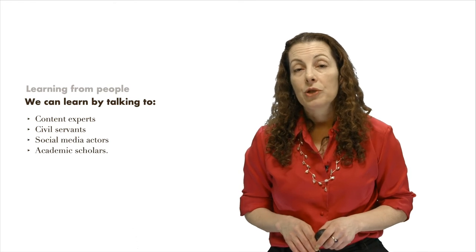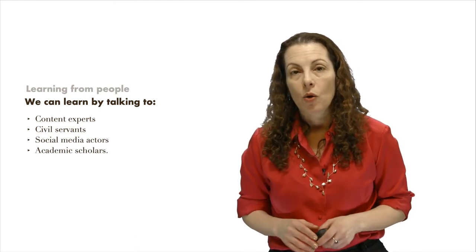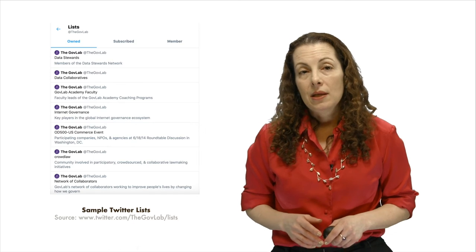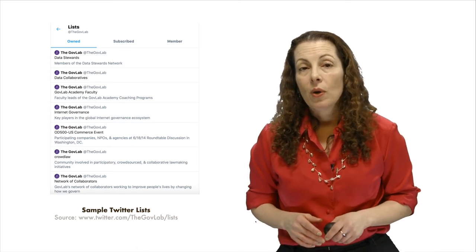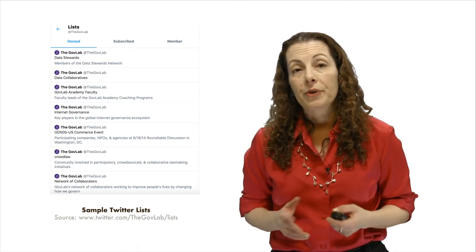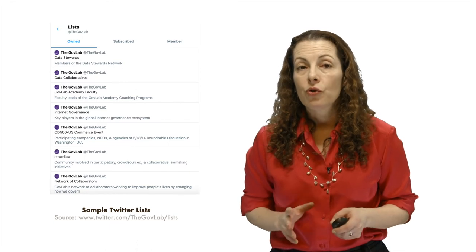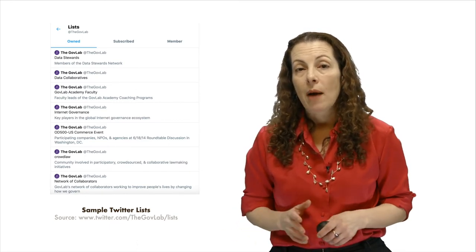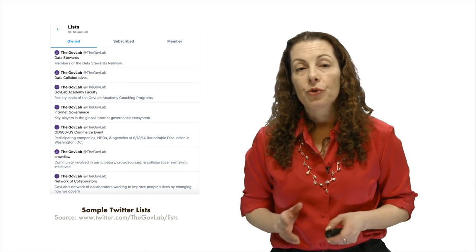But because many organizations cannot afford the communication staffing needed to bring attention to their programs to broadcast media or print media, many prefer to advertise their work on social media. To make the task easier, consider subscribing to an existing or creating a new Twitter list. A Twitter list is a curated group of Twitter accounts. You can compile a list of the best people on your topic and create a list to monitor relevant conversations.